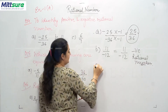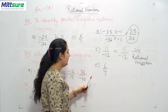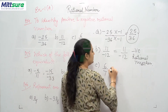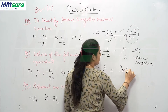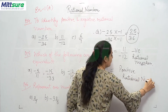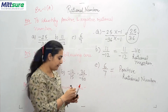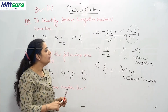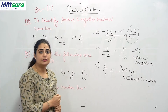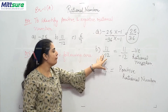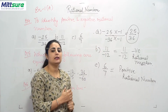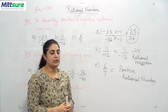For 6 upon 7: both numerator and denominator have positive signs, so this is a positive rational number. To identify a positive or negative rational number, check whether negative signs are present in the numerator or denominator. Based on the presence of negative signs, you can identify whether the given rational number is positive or negative.